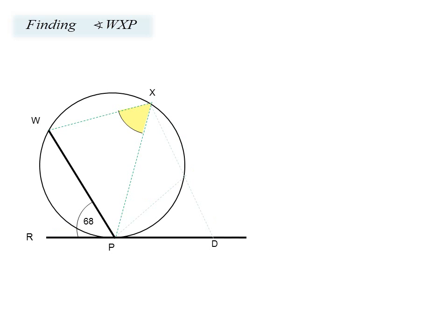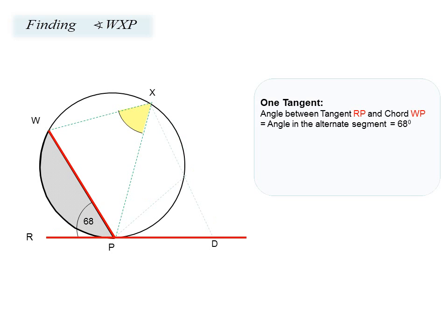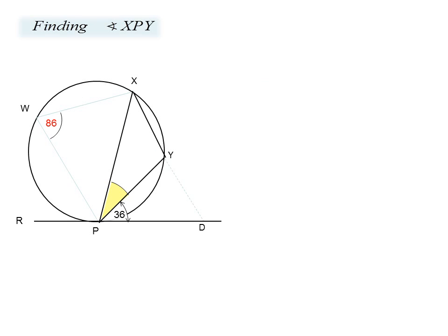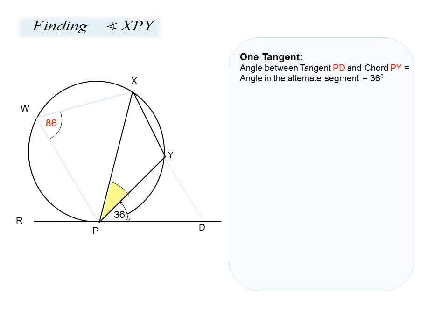Let us find the first angle WXP. We note that we have the angle 68 degrees given between chord WP and tangent RPD. Therefore the angle subtended in the alternate segment must also be equal to 68 degrees. Using the same theorem with chord PY, the angle between PY and the tangent equals the angle subtended at X in the alternate segment, giving PXY as 36 degrees.